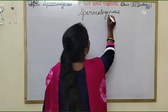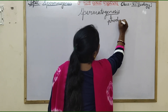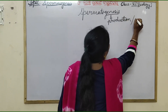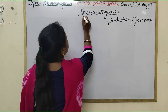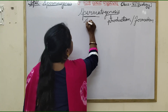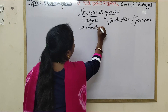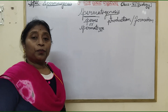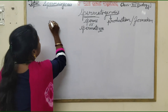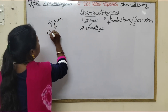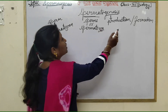Spermatogenesis: 'genesis' means production or formation. So spermatogenesis means the production or formation of sperms. Sperms are also known as spermatozoa — 'spermatozoa' is the plural form, and 'spermatozoon' is the singular. So spermatogenesis means production of sperms.